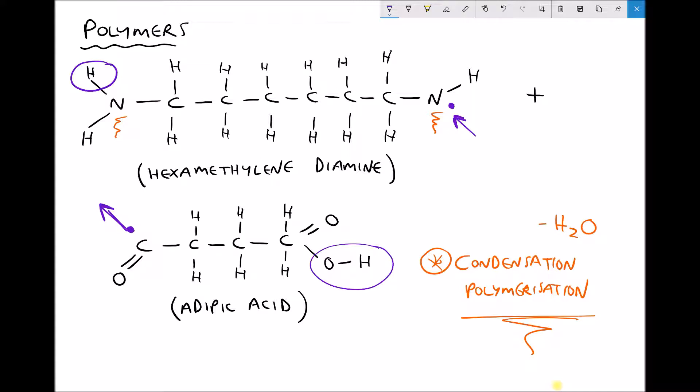That type of polymerization is called condensation polymerization. When all of these reactions take place and we end up with these long polymer chains, the polymer that we're producing is something you will have heard of and this polymer is nylon. We have a reaction between an amine and an acid, water is condensed and we're left with nylon.